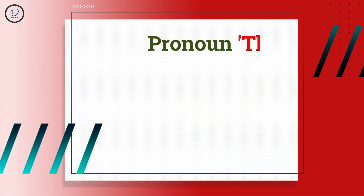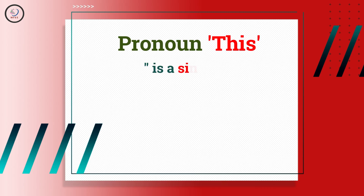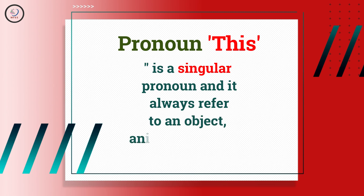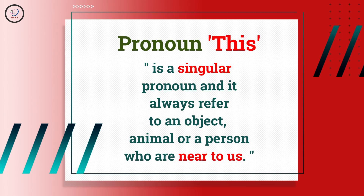Now let's move on to the lesson. The pronoun 'this' is a singular pronoun and it's always referred to an object, animal, or a person who are near to us or close to us.